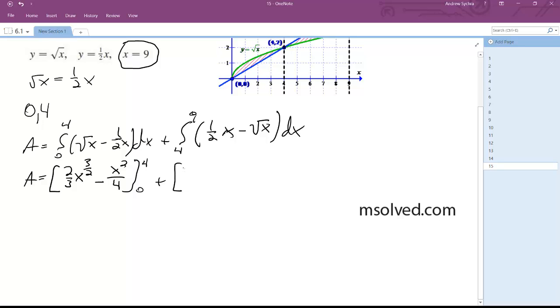Plus x squared over 4 minus 2 thirds x raised to the 1 half from 4 to 9.